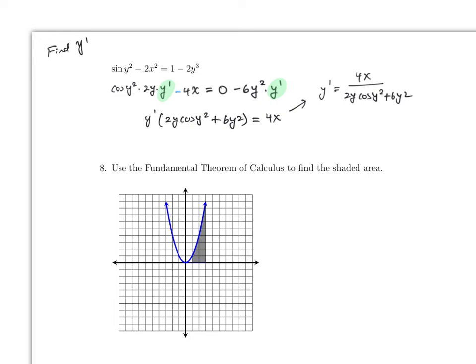How did you combine both the y prime sides? Just move them to the same side — this is negative, when moved it becomes positive; and this one is negative, moved to the other side it becomes positive. Then you just factor it. You can also simplify further by factoring 2y, giving y prime equals 4x over 2y(cosine y² plus 3y), if you want.